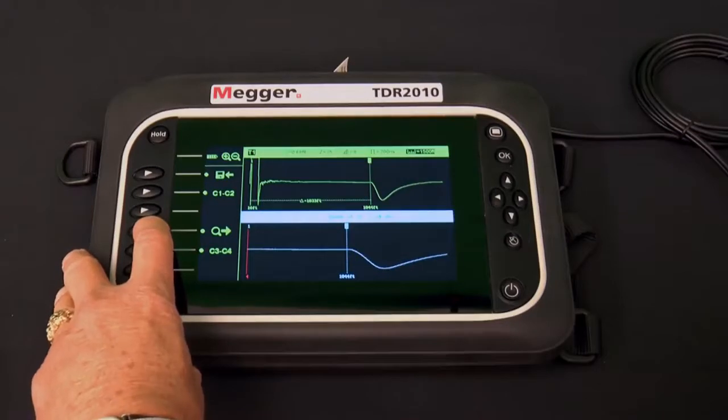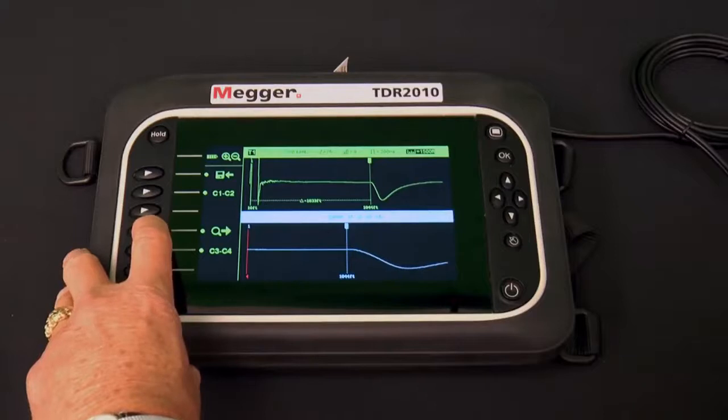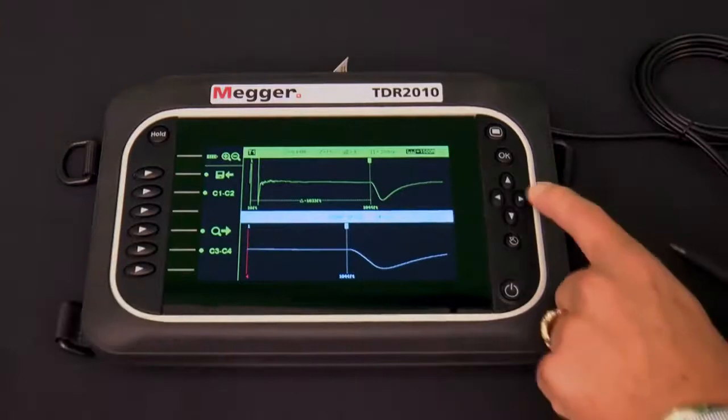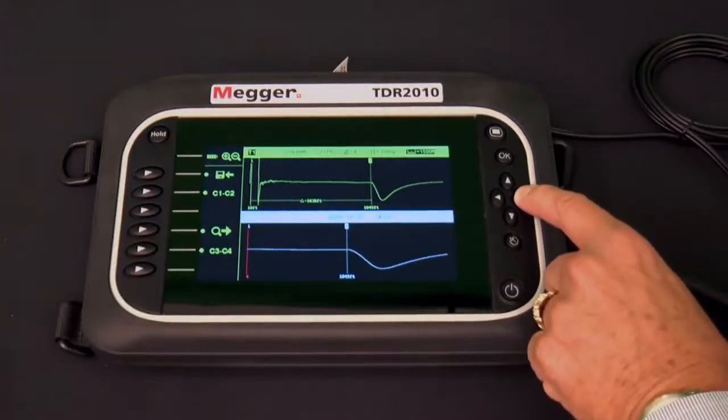Each time the zoom soft key is pressed, the level of magnification is changed and that level is highlighted. The cursor can be moved to adjust its position on the trace.